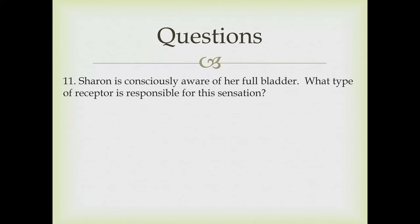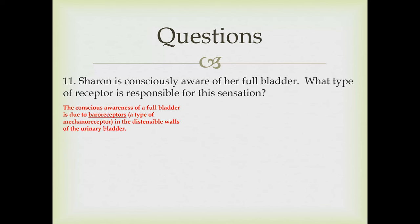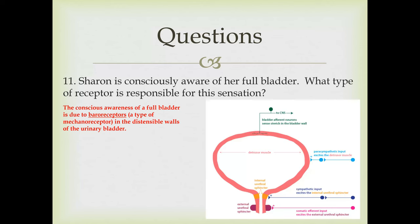Question eleven: Sharon is consciously aware of her full bladder. What type of receptor is responsible for this sensation? The conscious awareness of a full bladder is due to baroreceptors, which are a type of mechanoreceptor, located in the distensible walls of the urinary bladder. Afferent free nerve endings embedded in the bladder wall sense when the bladder stretches and send a signal to the brain to let us know we need to urinate. There is also conscious somatic skeletal control over the external urethral sphincter, which we'll discuss further when we get to the urinary system.